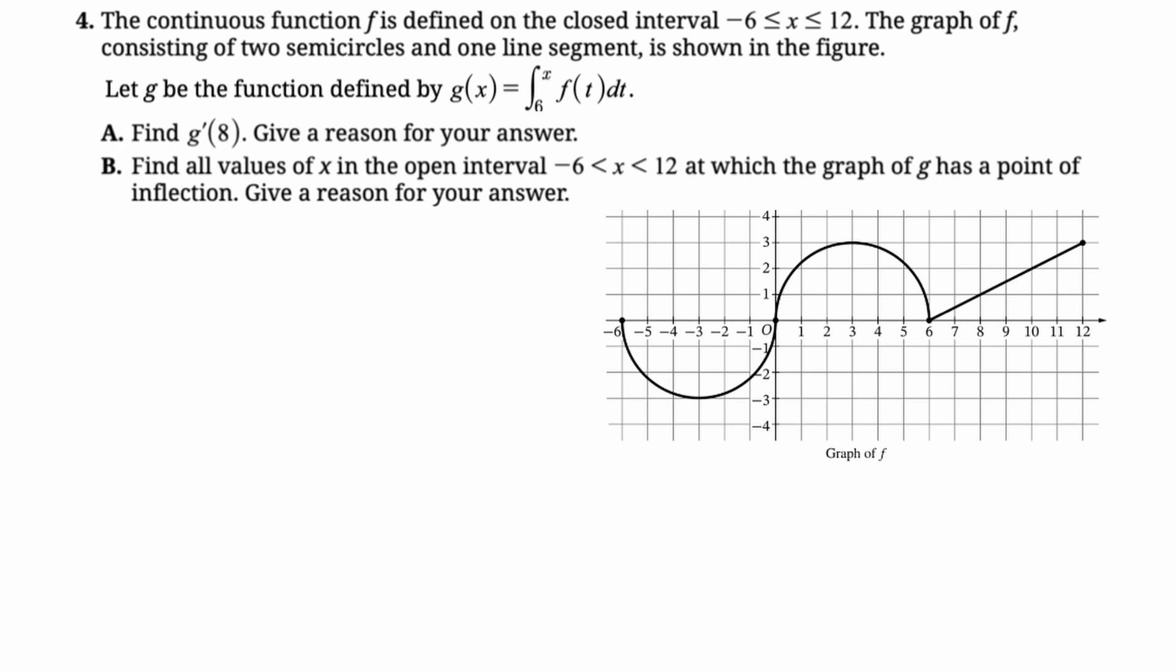First thing I'm going to do is say that g prime of x by the second fundamental theorem is going to be f of x, f of x times 1. So that means that g prime of 8 is actually just f of 8. And to get f of 8, we're going to go to the figure and find the point. And f of 8 is 1.